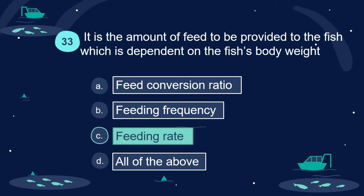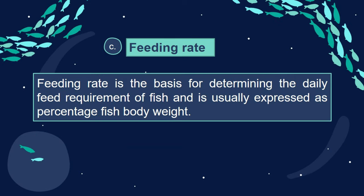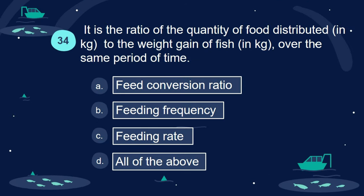Answer: C. Feeding rate. Feeding rate is the basis for determining the daily feed requirement of fish and is usually expressed as a percentage of fish body weight.